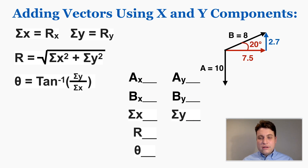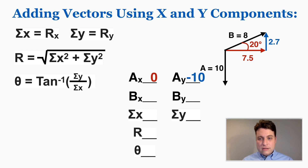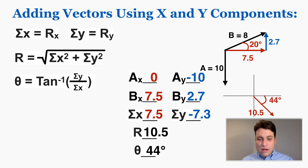Here's another example with two vectors. Students get confused with a perfectly vertical vector — because it's perfectly vertical, it's not moving left or right at all, so its x component is 0, and its y component is negative 10 because it's pointing down. For vector B, the x and y components are 7.5 and 2.7. Adding them together gives an x component of 7.5 and a y component of negative 7.3. The Pythagorean theorem gives a resultant of 10.5 and an angle of 44 degrees, placing it in the fourth quadrant where x is positive and y is negative.